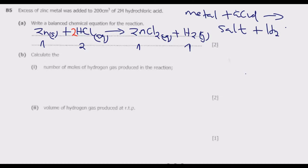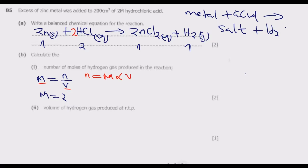Once we know the moles of HCl, we can determine moles of H₂ produced. Molarity M equals number of moles divided by volume in dm³, where 1 dm³ equals 1000 cm³. We know M equals 2. To convert 200 cm³ to dm³ we divide by 1000.